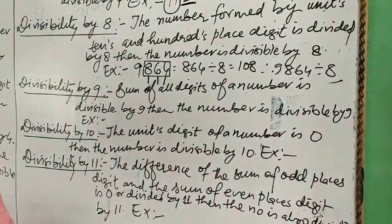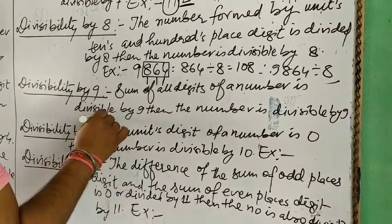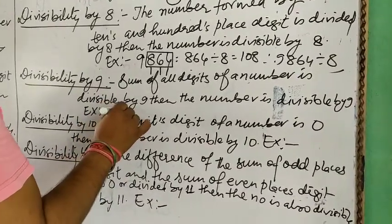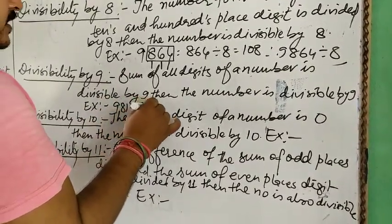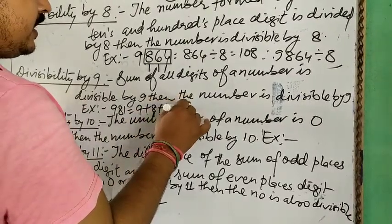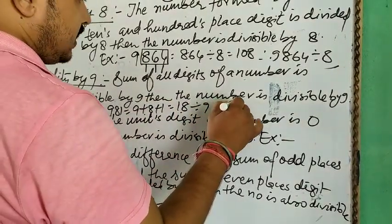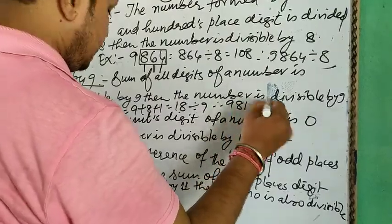Divisibility rule of 9: For example, 981. That means 9 plus 8 plus 1 equals 18, which is divisible by 9. So 981 is divisible by 9.